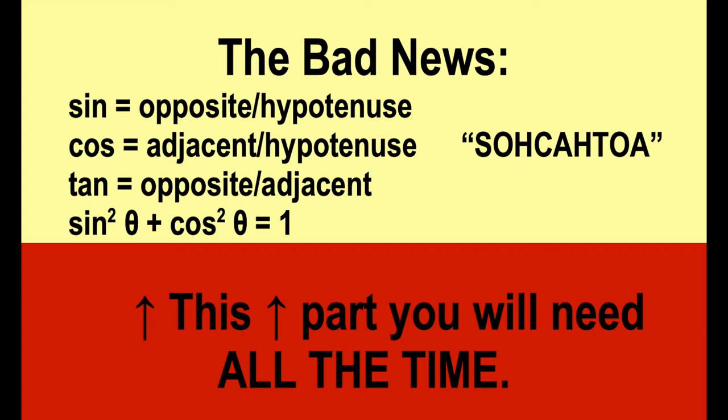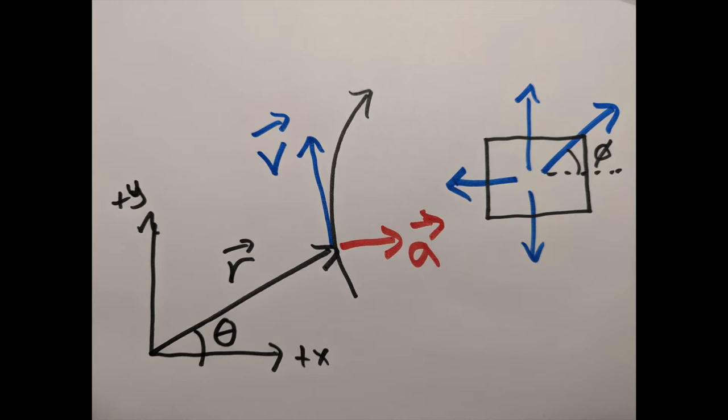When things move around in two dimensions, they're going to have directions we need to describe, which means we need angles, which means we need a little bit of trigonometry.